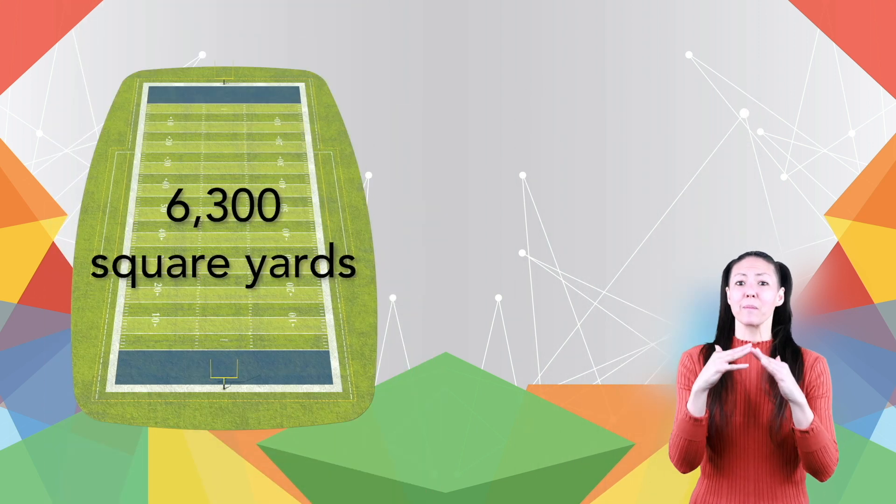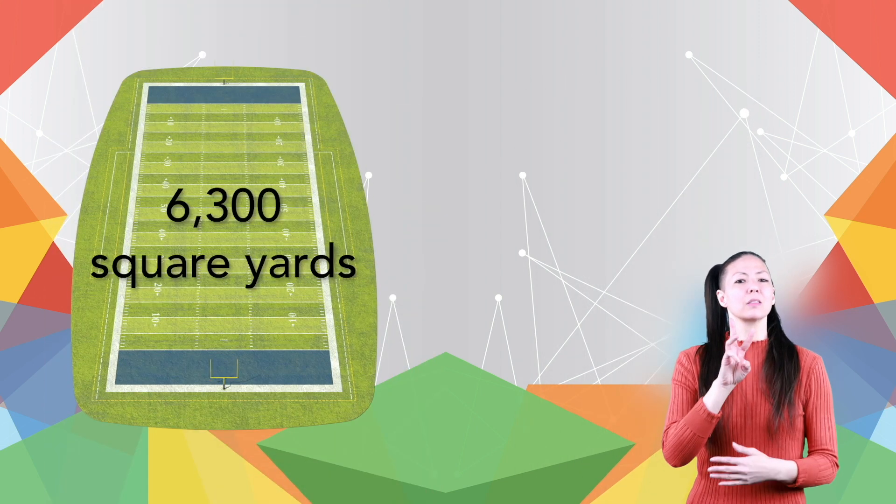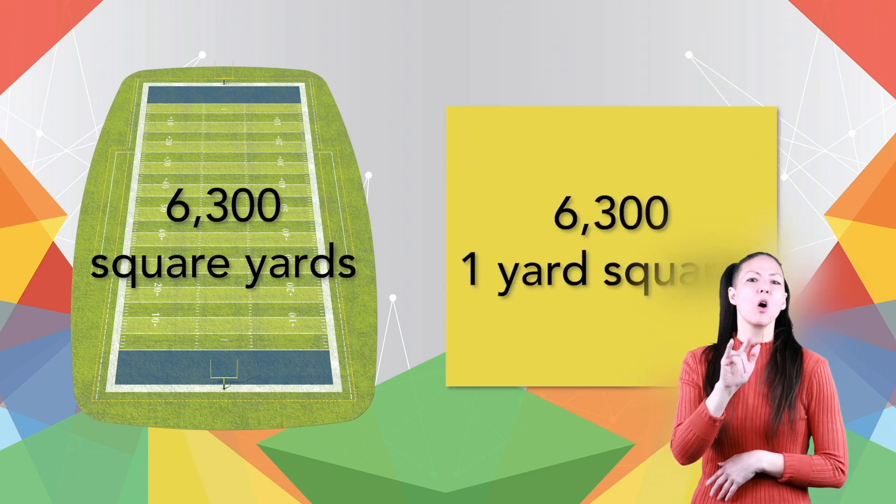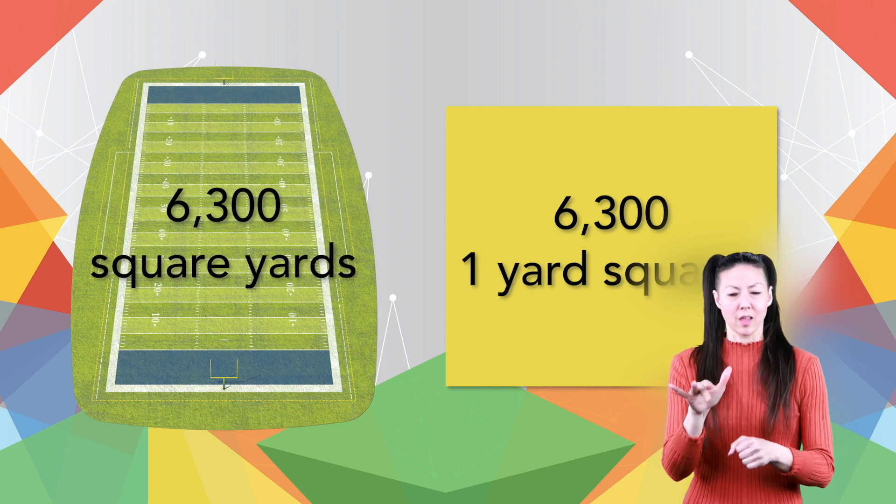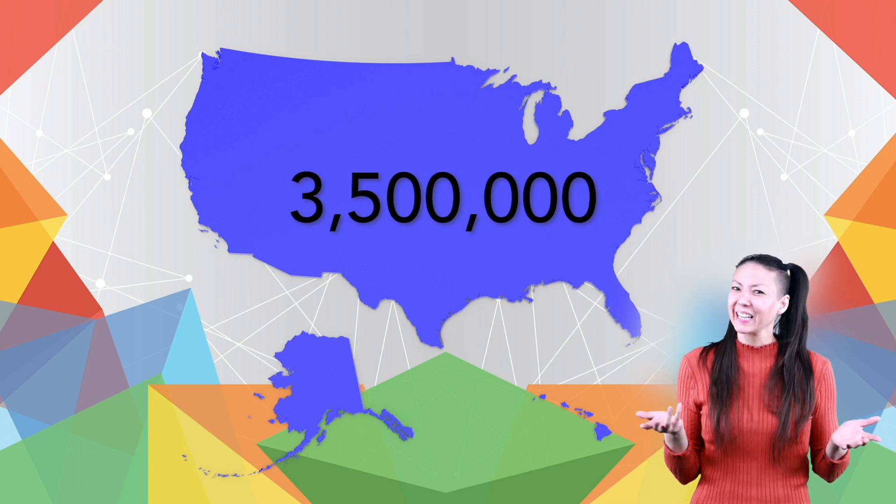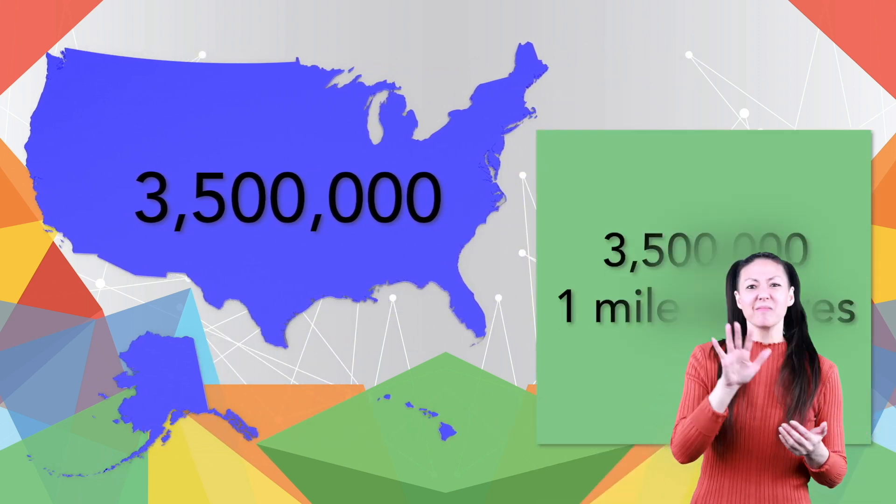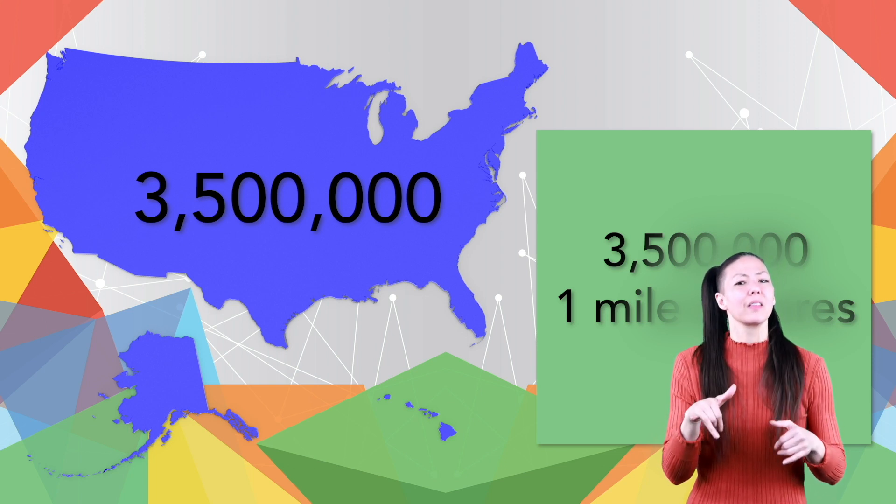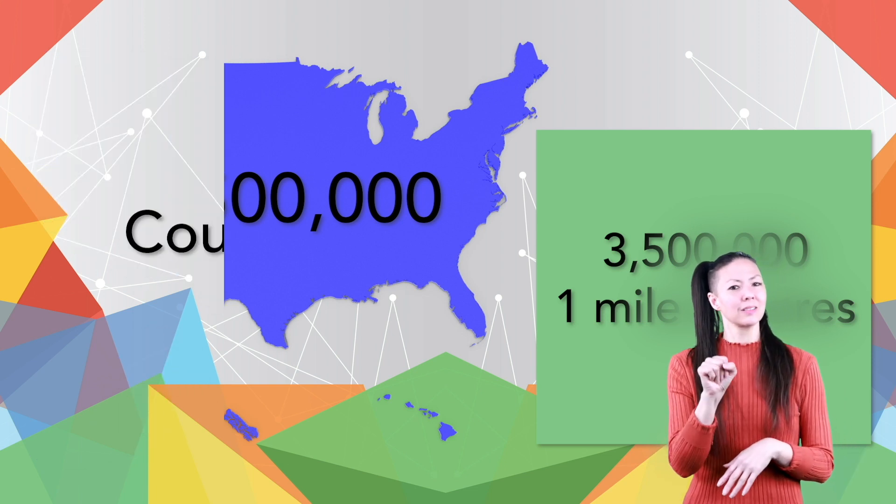A football field area is about 6,300 square yards. That means it would take 6,300 one yard squares to cover an entire field. How much area do you think the United States has? If you guess 3,500,000 square miles, then you're amazing. That's right, it would take 3,500,000 one mile squares to cover all the land in the U.S.